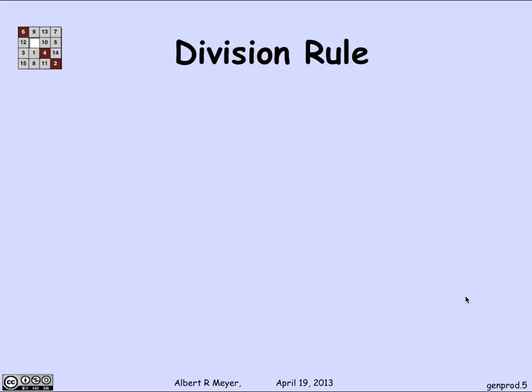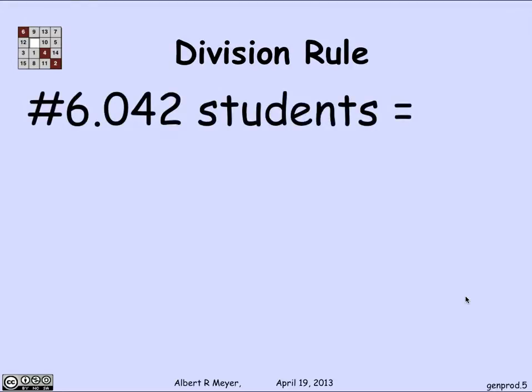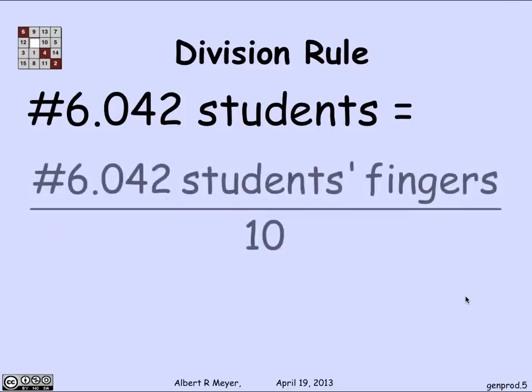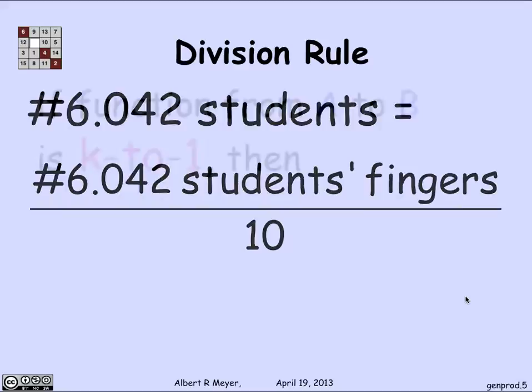Now we come to the generalized projection rule, which is called the division rule, and the simple memorable way to illustrate it is if you wanted to count the number of students in class 6042, you could count the number of students' fingers and divide by 10. Now it's probably harder to count fingers than students, so this is not meant as a practical method, but it illustrates a basic and straightforward idea. Of course, it's implicitly assuming that we don't have any instances of amputations or polydactylism, and that in fact every student has exactly 10 fingers.